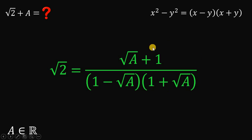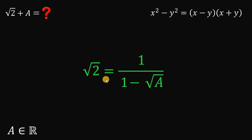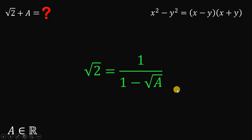Take note that on the numerator it is the same thing as square root of a plus 1. So we can cancel out a factor of square root of a plus 1 on the numerator and 1 plus square root of a on the denominator. Therefore, we have square root of 2 equals 1 over 1 minus square root of a.